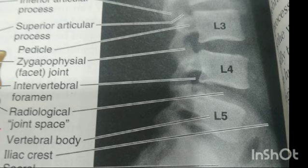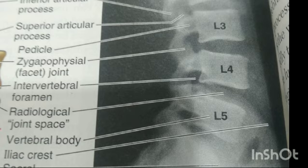Vertebra L5 is distinguished by its massive body and transverse processes and is the largest of all the movable vertebrae. It carries the weight of the whole upper body. The L5 body is markedly taller anteriorly, and therefore it is largely responsible for the lumbosacral angle between the long axis of the lumbar region of the vertebral column and that of the sacrum.